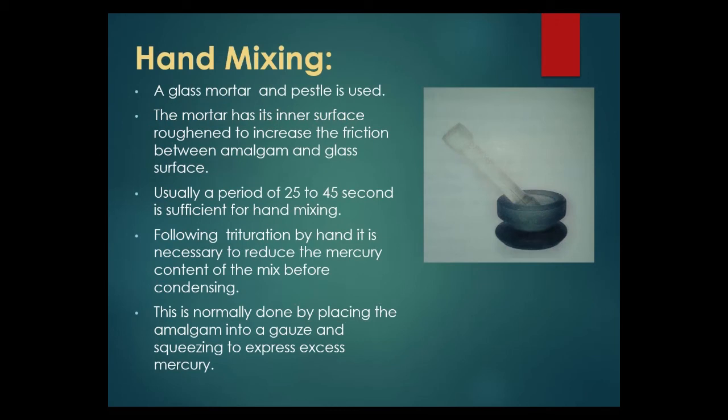Hand mixing of amalgam. A glass mortar and pestle is used for hand mixing. The mortar has its inner surface rough to increase friction between amalgam and glass. Usually a period of 25 to 45 seconds is sufficient for hand mixing. Following trituration by hand it is necessary to reduce the mercury content of the mix before condensing into the tooth cavity.